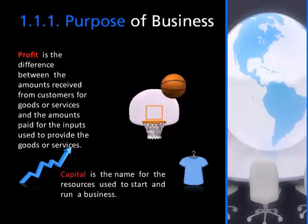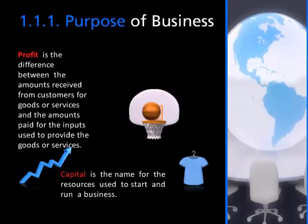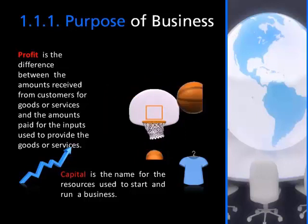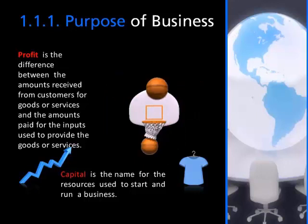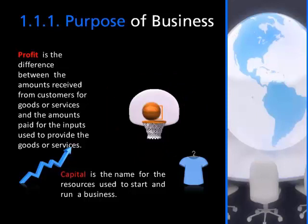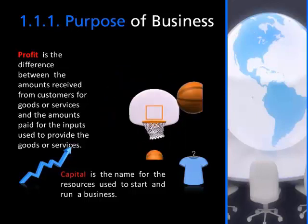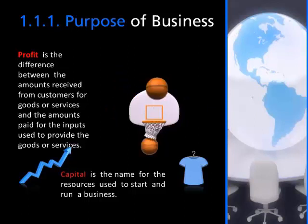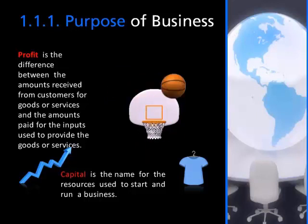A business begins by obtaining financial resources — that means money. Tom's Wear began with five thousand dollars of Tom's own money and a five-hundred-dollar loan from his mother. The financial resources to start a business, called capital, come from the owners. Why buy a T-shirt from Tom rather than from the manufacturer? It's all about value — we order clothes from Lands' End because the company provides added value, such as the convenience of mail-order delivery.